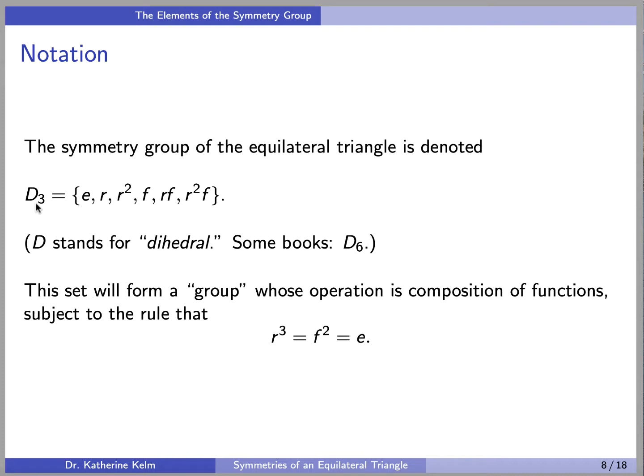So this set will form a group whose definition we don't quite know formally yet, but the group is, as we said before, a set with an operation. So this is the set, and the operation is composition of functions, and the elements follow the rule that R cubed equals F squared equals E. Remember, E is the identity permutation, and R is a rotation by 120 degrees.